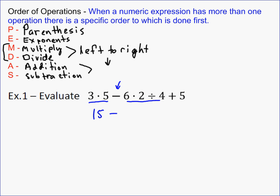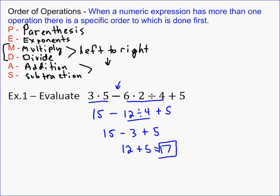You don't want to do 2 divided by 4 before you multiply by 6. So you're going to do 6 times 2 first, which gives you 12, then divide by 4, then plus 5. Resist the temptation to add or subtract — we're not done multiplying or dividing yet. So 12 divided by 4 is 3, giving us 15 minus 3 plus 5. Moving left to right, 15 minus 3 is 12, plus 5 gives you 17.